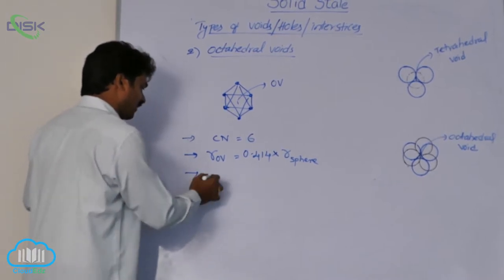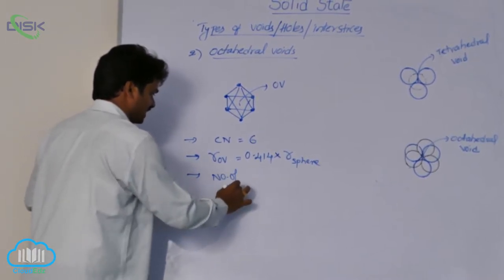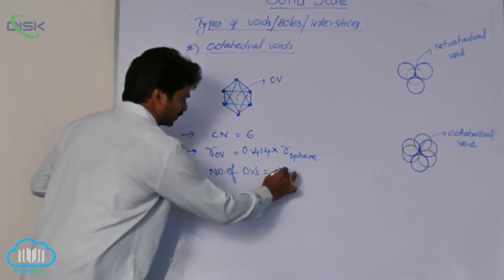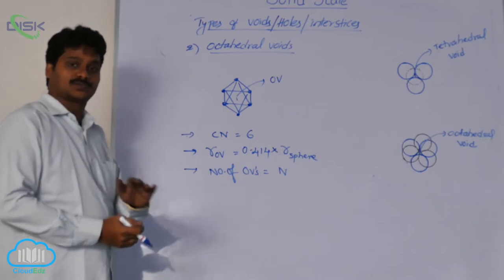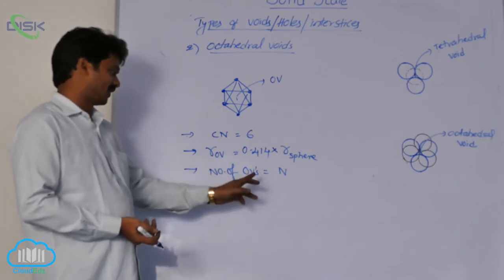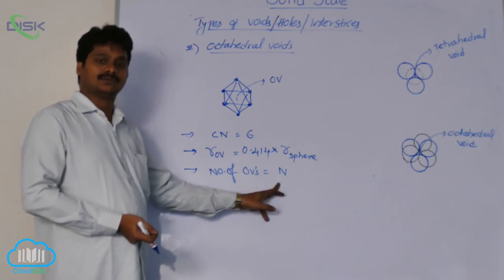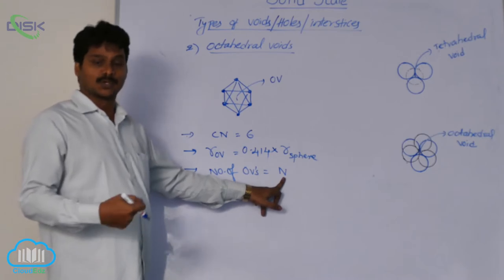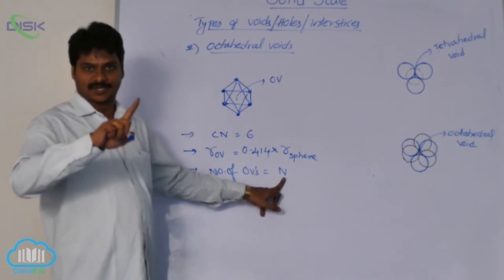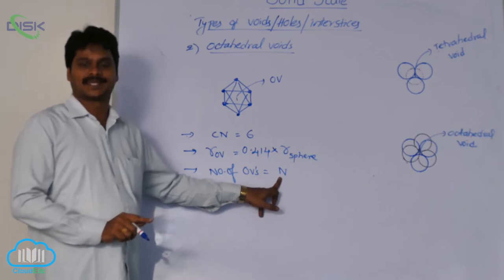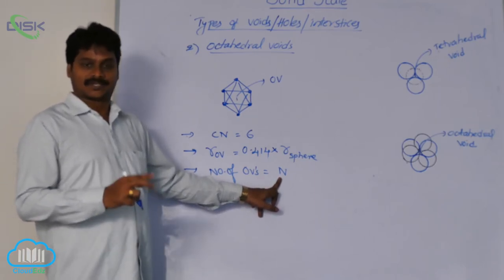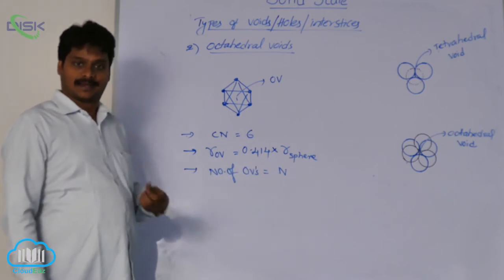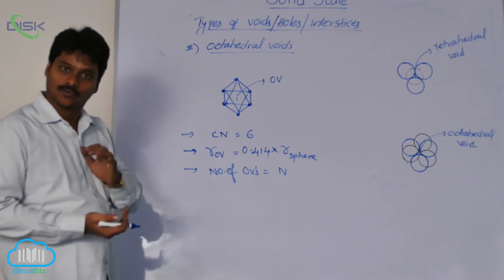The number of octahedral voids in a unit cell is exactly equal to the number of effective atoms per unit cell. In a simple cubic system, there is 1 effective atom, so there is 1 octahedral void. In BCC, effective atoms are 2, so octahedral voids are 2. In FCC, the number of effective atoms is 4, so octahedral voids are 4.